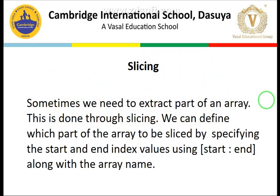Next is slicing. Slicing means making a part of something bigger. Sometimes we need to extract part of the array — we don't need the full array, only a subset of it. This is done through slicing. In slicing, we have a start value, an end value, and then an increment or decrement value called the step value. If the step value is missing, by default it will have a step value of 1.